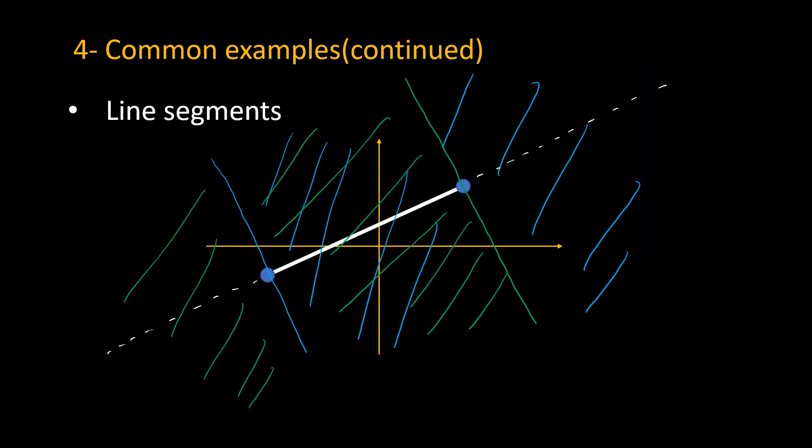Line segments are polyhedra. For example, this line segment here can be represented as the intersection of two half spaces. So I have this blue half space here and this green half space here. The intersection of these two half spaces is going to be this panel right here. Now I can define a line using the line segment, which is the dotted white line, and the intersection of the line and two half spaces is going to be a line segment. Therefore, I have a polyhedron.